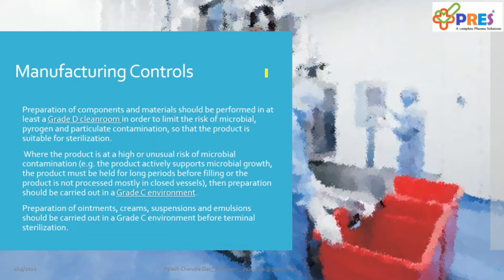There is a choice: if your product is at higher risk — for example, if it is very susceptible to microbial growth, you have open vessels during manufacturing, or the product must be held for a longer period before filling or sterilization — then based on different risk-based scenarios, you can upgrade your environment to safeguard your product. The minimum recommendation is Grade D, but you can select Grade C as well based on your requirement.